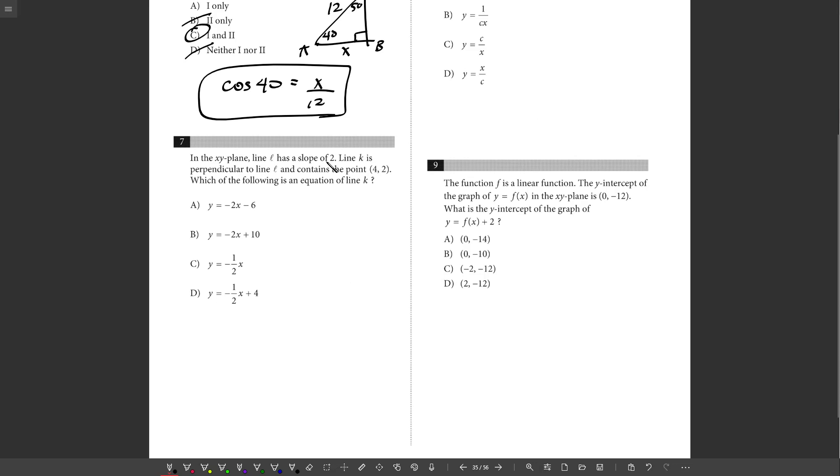Seven, line L has a slope of two. K is perpendicular. What's the equation of line K? So if K is perpendicular, its slope is the opposite reciprocal of line L's slope. So the slope of K is the flip of two. Take the reciprocal of it and change its sign. So right away, A and B are out.